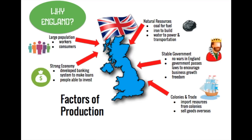England is one of the first countries to industrialize, and the reason is that they have all the factors of production and then some: a large population, a strong economy, great natural resources — especially coal, which is vitally important for powering the steam engine — a stable government without wars, a degree of freedom for the people, and colonies and trade overseas. England's advantages allow it to take the lead in the Industrial Revolution.